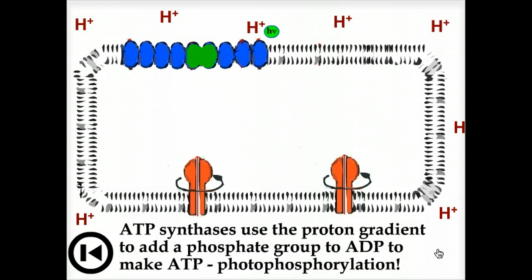ATP synthases use the proton gradient to add a phosphate group to ADP to make ATP.